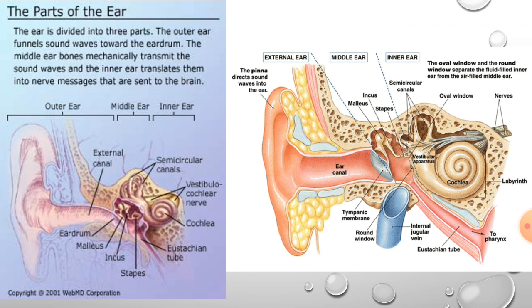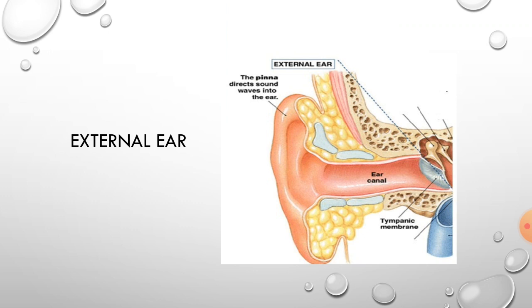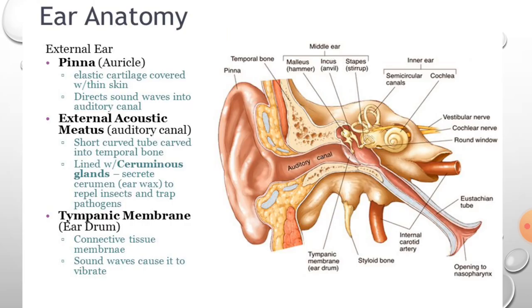In this class we're going to learn about the outer ear, also called the external ear. The external ear is composed of the pinna or auricle that is visible externally, the external acoustic meatus which is the auditory canal (also called the external auditory meatus), and the tympanic membrane which makes its medial-most boundary.